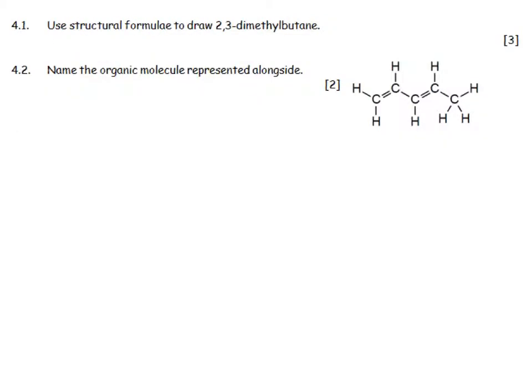Using structural formulae, draw 2,3-dimethylbutane. Butane: 1, 2, 3, 4. Dimethyl: there is a methyl group on number 2 and a methyl group on number 3. I then need to be counting out my extra hydrogens, and I'll need a hydrogen here.